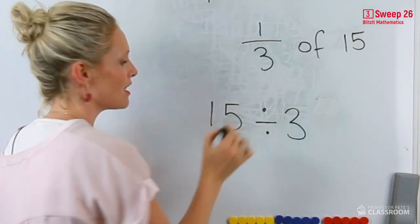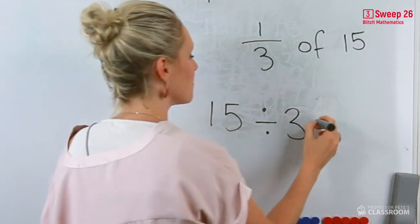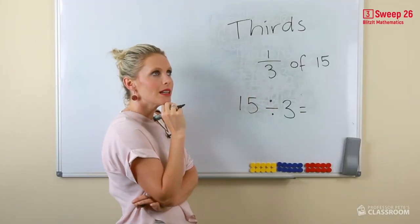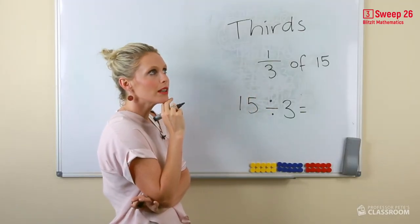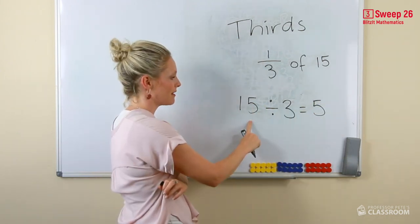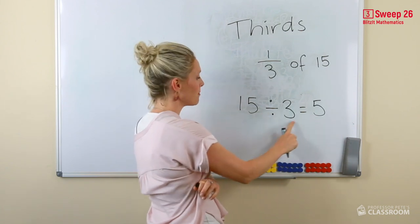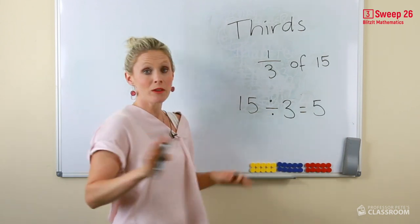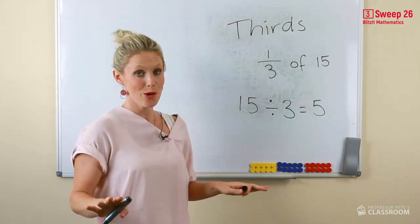15 divided by three. Three times what equals 15? Three times five is 15, or five times three equals 15. We've checked our answer. We know we're confident.